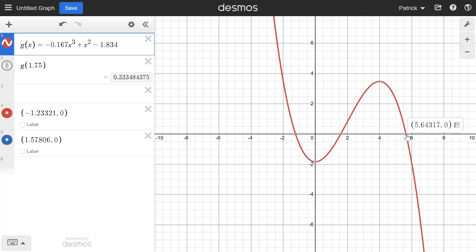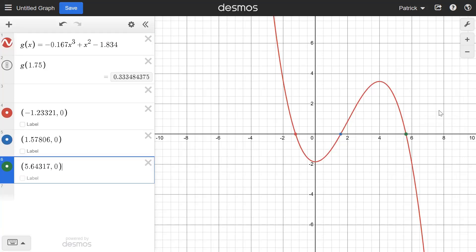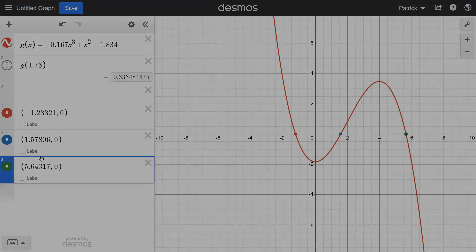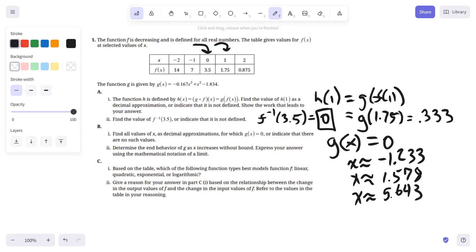And we would report the X values accurate to at least 3 decimal places, so there we have the approximations to 3 decimal places. The second part, determine the end behavior of G as X increases without bound.